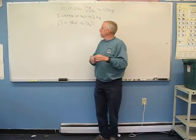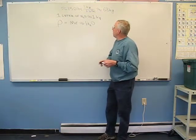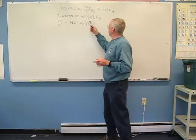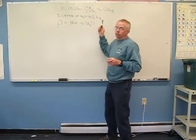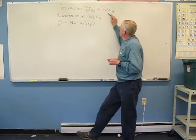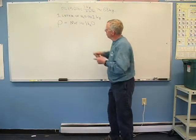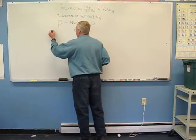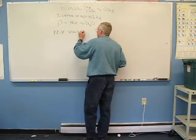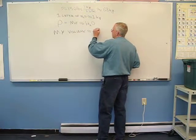So my density is approximately the same as the density of water. If one liter of water has a mass of one kilogram, and I'm 68 kilograms at the same density as water, then my volume should be approximately 68 liters.